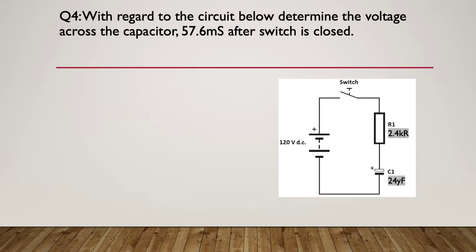Question four. With regard to the circuit below, determine the voltage across the capacitor 57.6 milliseconds after the switch is closed. So, we've got 120 volts DC, a resistor at 2.4K, and a capacitor at 24 microfarads. So, pause here.